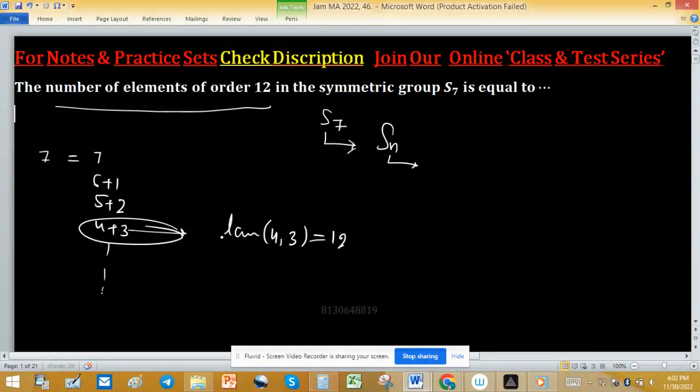...number of elements of order 12 will exist. It means there will be a permutation of length 4 and a permutation of length 3 will exist, and the order of permutation we can find using lcm of length of disjoint cycles. So only in this case you will have lcm 12.